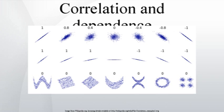Other Measures of Dependence Among Random Variables. The information given by a correlation coefficient is not enough to define the dependent structure between random variables. The correlation coefficient completely defines the dependent structure only in very particular cases, for example when the distribution is a multivariate normal distribution. In the case of elliptical distributions it characterizes the hyper-ellipses of equal density; however, it does not completely characterize the dependent structure — for example, a multivariate t-distribution's degrees of freedom determine the level of tail dependence. Distance correlation and Brownian covariance/Brownian correlation were introduced to address the deficiency of Pearson's correlation that it can be zero for dependent random variables.